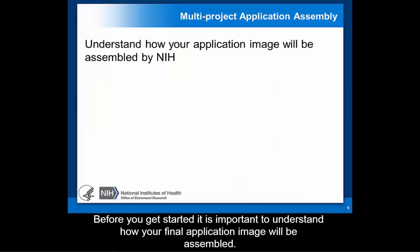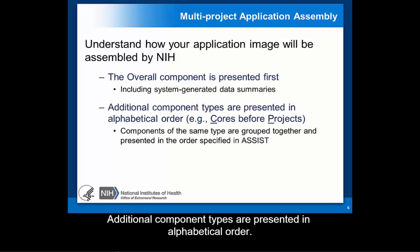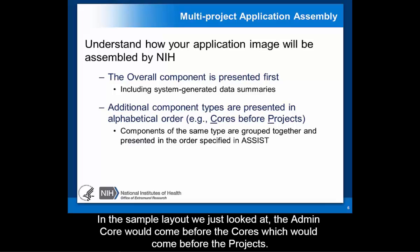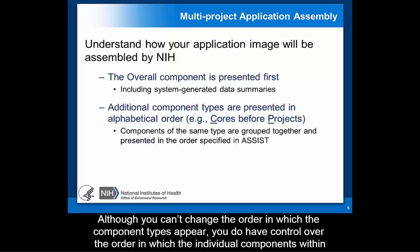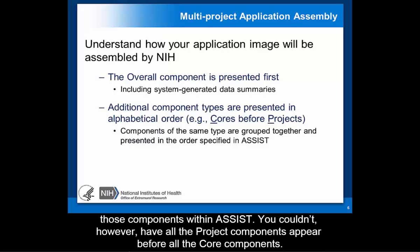Before you get started, it is important to understand how your final application image will be assembled. The overall component is always presented first, along with the data summaries. Additional component types are presented in alphabetical order — in the sample layout, the admin core would come before the cores, which would come before the projects. Although you can't change the order in which the component types appear, you do have control over the order in which the individual components within a component type appear. For example, if you decided that Project 3 should really be Project 1, you'd be able to reorder those components within ASSIST. You couldn't, however, have all the project components appear before all the core components.